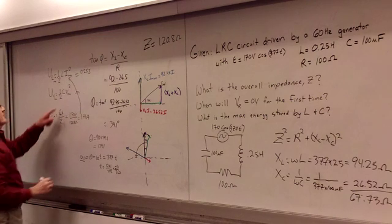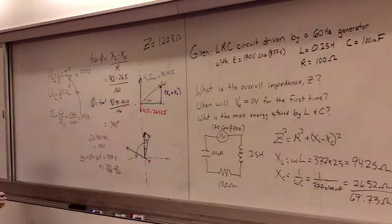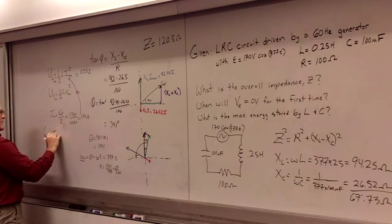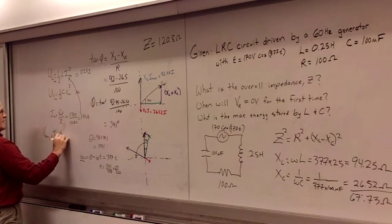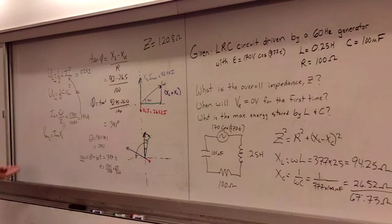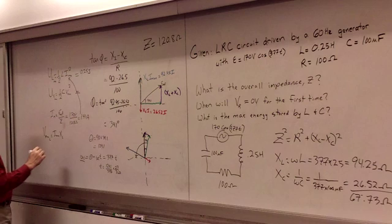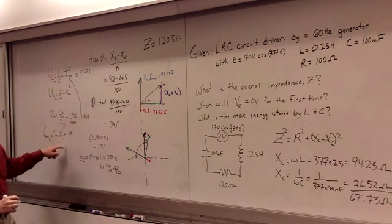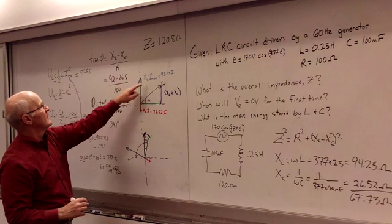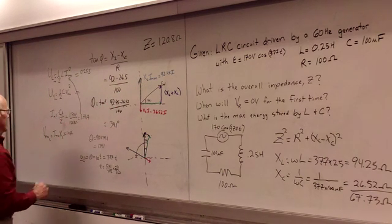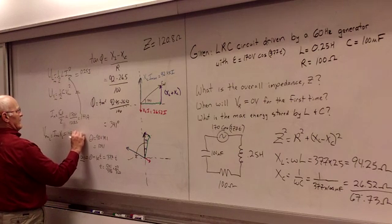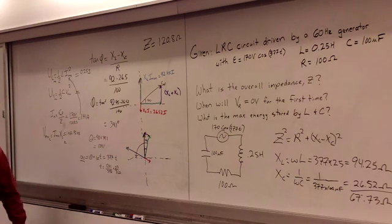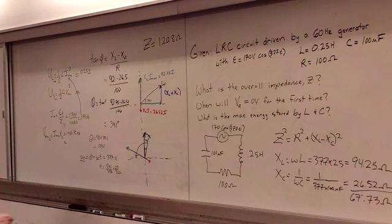And then what do we get for this version? Well, we have to figure out what the Vmax happens to be across the inductor. Vmax on the inductor is going to be given by Imax times XL. So I plug in my Imax value again, 1.41 amps, and multiply by our XL value, 92.45. When you run that calculation, for that voltage, we end up getting 37.4 volts.